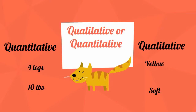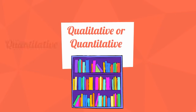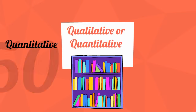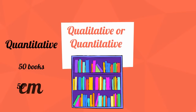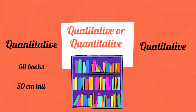Let's look at a bookshelf. The quantitative data would be that you have 50 books on the bookshelf and it is 50 cm tall. The qualitative data would be that it is multicolor and has a smooth surface.